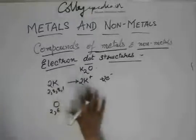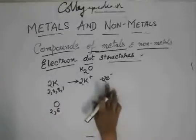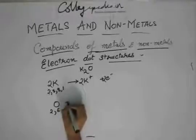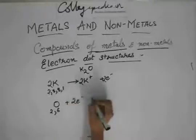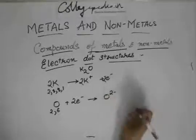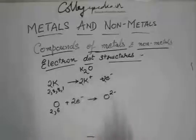So you write the equation like this because the oxygen will require two electrons, not one electron. So oxygen will take up these two electrons and become O2-, two minus charge.